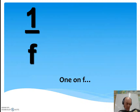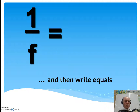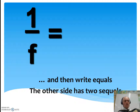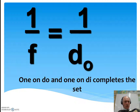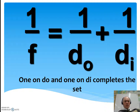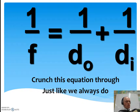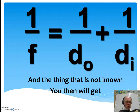A one on F, and then right equals, the other side has two sequels — one on Doe, and one on Die completes the set. Crunch this equation through, just like we always do, and the thing that is not known you then will get.